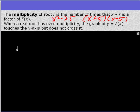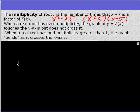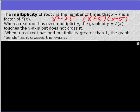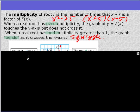So when a real root has an even multiplicity, the graph of the polynomial touches the x-axis but does not cross it. When the real root has an odd multiplicity, and that's things like 2, 4, 6, 8. An odd multiplicity greater than 1, the graph bends, and I like to call the bend, I usually call the bend a squiggle. That's the technical name, not really, but that's what I call it. It looks more like a squiggle than a bend to me. So it bends as it crosses the x-axis. So what does that exactly mean?